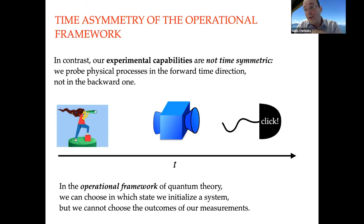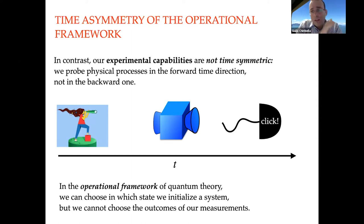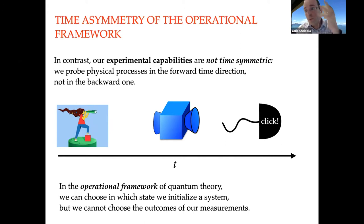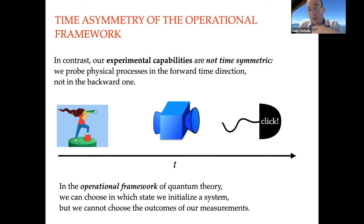The official operational framework of quantum theory is also asymmetric: we can choose how to initialize the state — the operational rules say we can prepare any density matrix — but we cannot choose the outcome of our measurement. We cannot in advance decide what outcome will come out. We cannot post-select deterministically. So we have power to do pre-selections but not so much power to do post-selections.